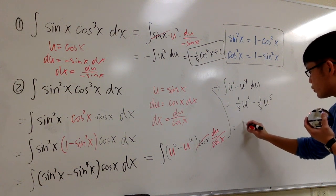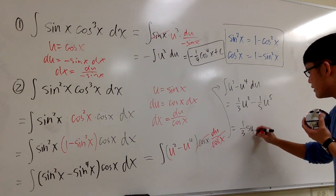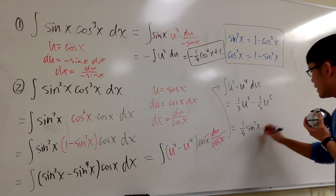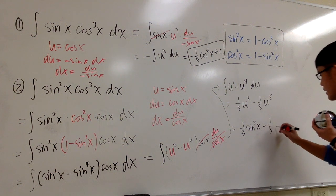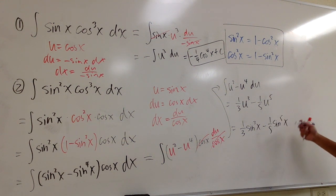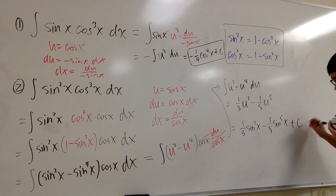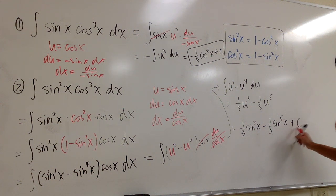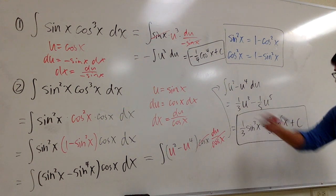So finally, this is 1 third, sine to the third power x, minus 1 fifth, sine to the fifth power x. So, that's it. That's it. Pull the box. Right here. Done.